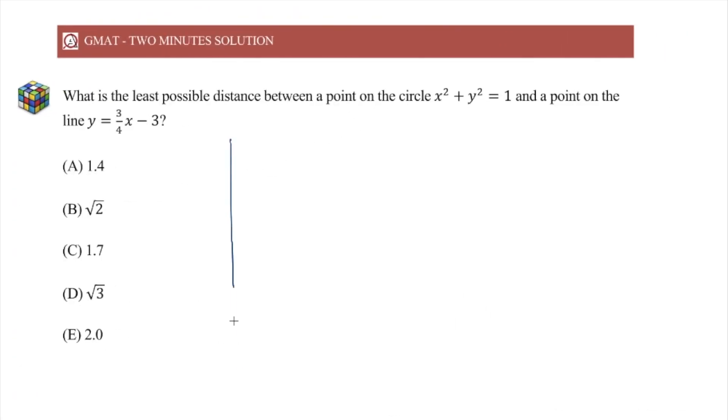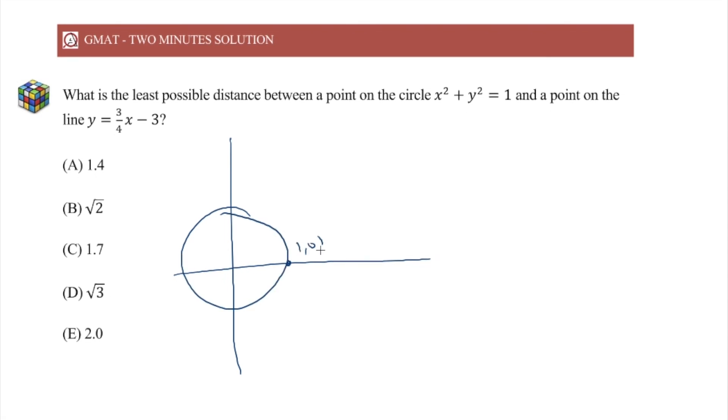Coordinate geometry, so let's draw a diagram. We have a circle centered at 0, 0 radius 1, so this is what it looks like.